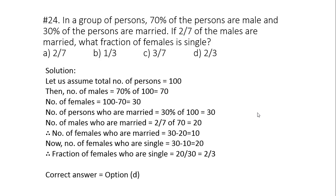But we are asked to find fraction of females who is single. So number of females who are single will be equal to total number of females that is 30 minus number of females who are married that is 10. So 30 minus 10 is equal to 20. Fraction of females will be equal to 20 divided by 30. Unmarried females divided by total females equals to 2 by 3. So correct answer is option D.